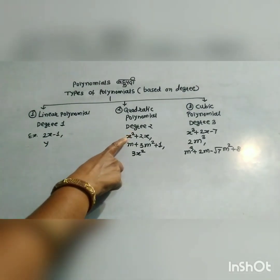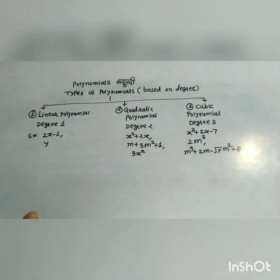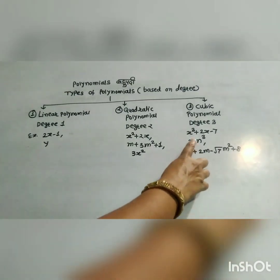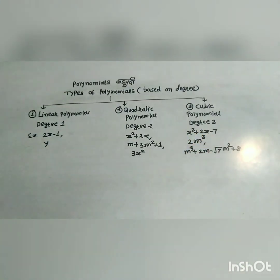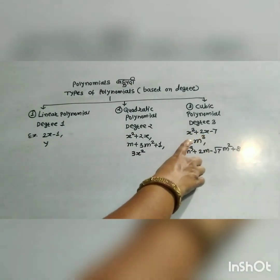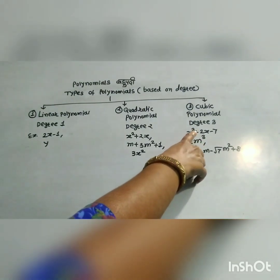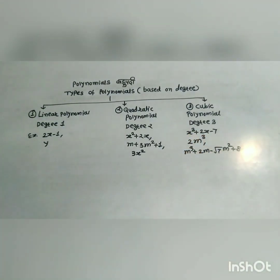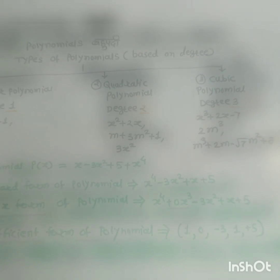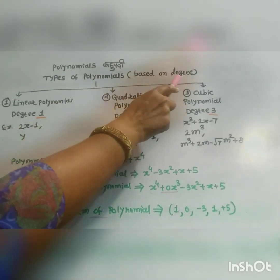A cubic polynomial has the highest power of the variable equal to 3, therefore its degree is 3. Types of polynomials based on degree: linear polynomial has degree 1, quadratic polynomial has degree 2, and cubic polynomial has degree 3.